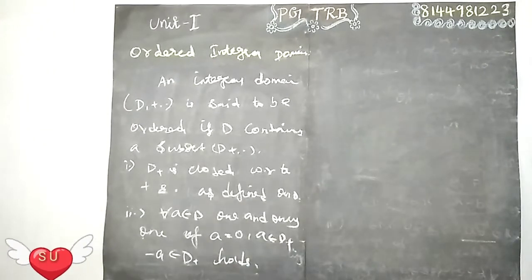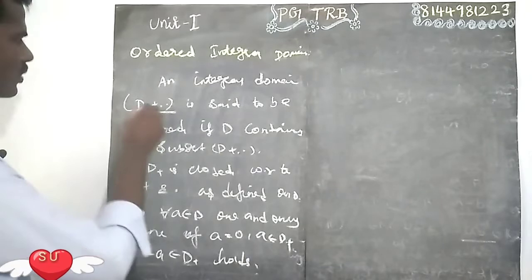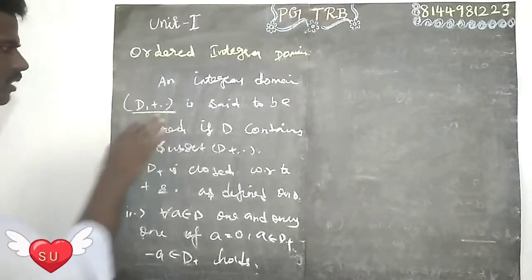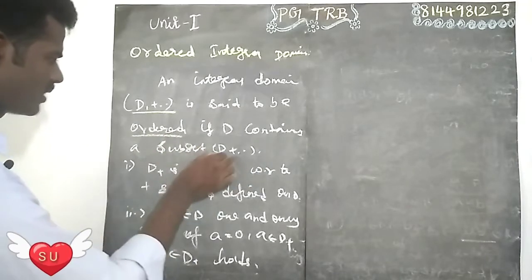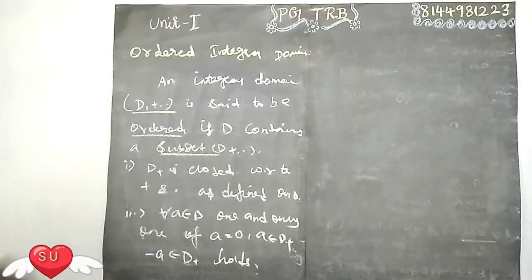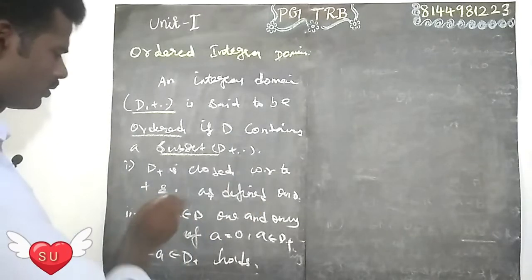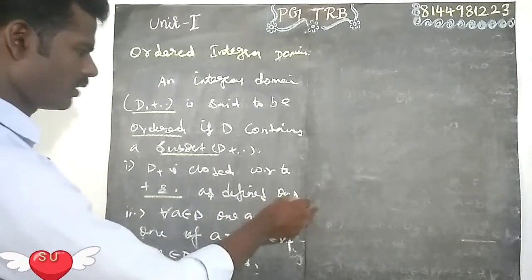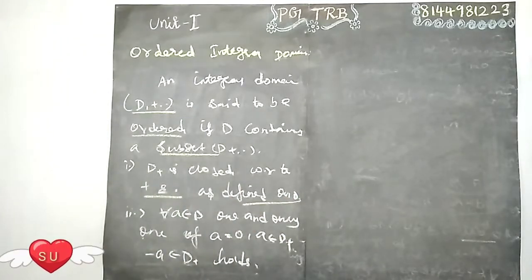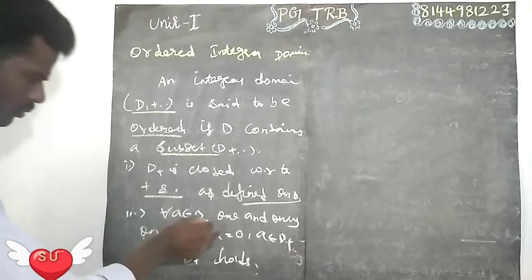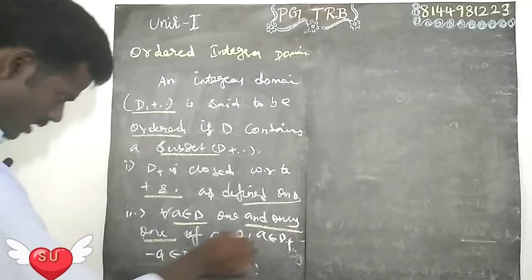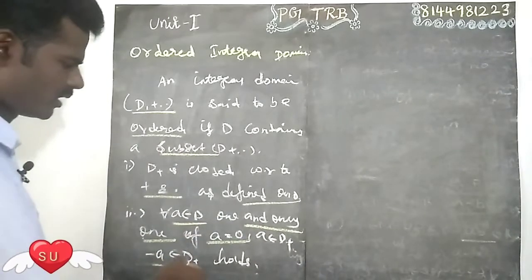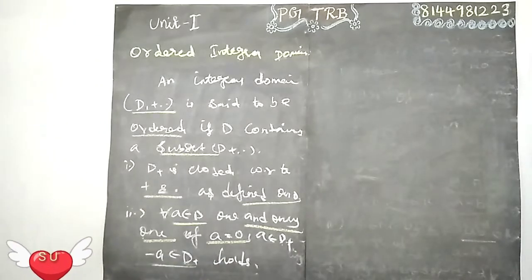So, an integral domain D with plus and dot is said to be an ordered integral domain if it contains a subset D+ such that D+ is closed with respect to plus and dot as defined on D, and for every a belonging to D, exactly one of a equals 0, a in D+, or minus a in D+ holds.